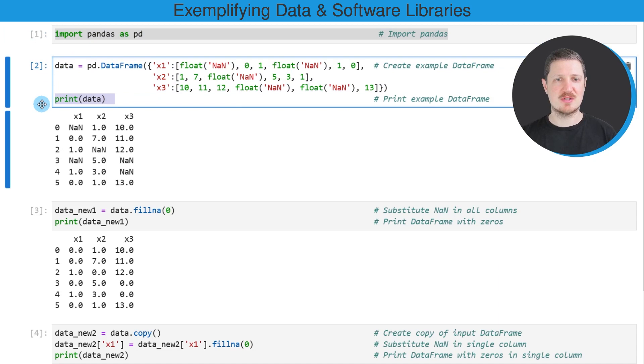We can print this data frame below the code box using the print function. You can see that we have created an example data frame that contains six rows and the three columns x1, x2, and x3. You can also see that some of the values in this data set are NAN.